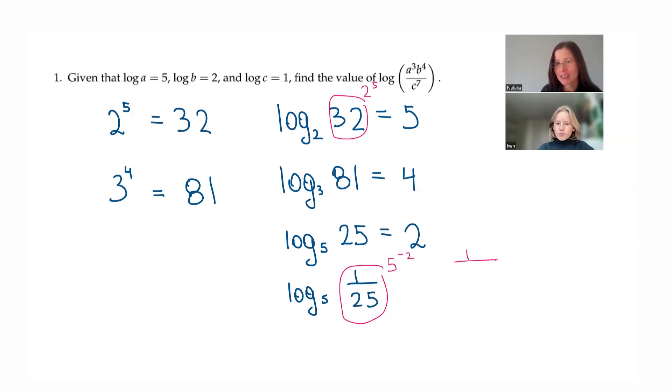Yeah. So negative sign in the exponent means take a reciprocal. And yeah, here it's 1 over 5 squared. Okay. So here we ask 5 into what exponent is equal to 1 25th? And that is negative 2.